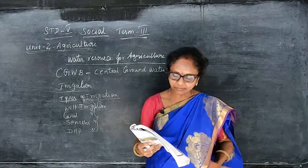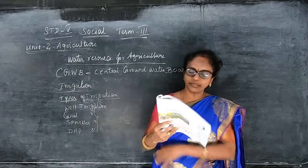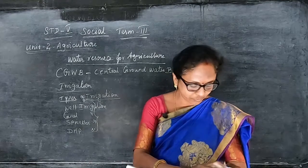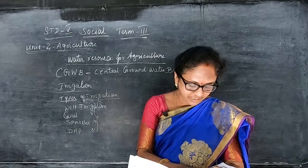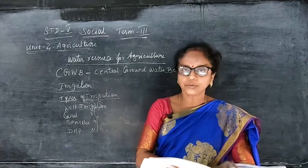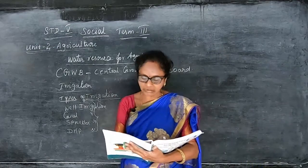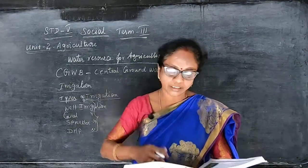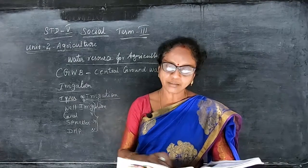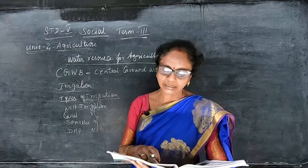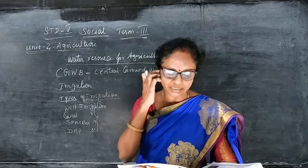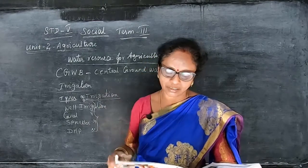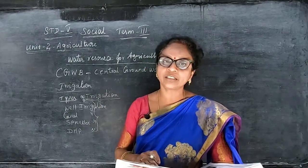Well irrigation has been practiced in Tamil Nadu for many generations and is a less expensive type of irrigation. Canal irrigation is the most important form of irrigation in India. Most of the north Indian canals are perennial, and the main canal-irrigated areas are in the northern plains such as Uttar Pradesh, Punjab, Haryana, Rajasthan, and Bihar.